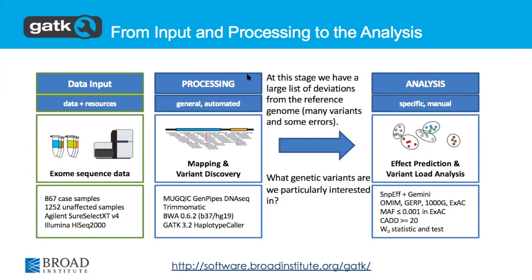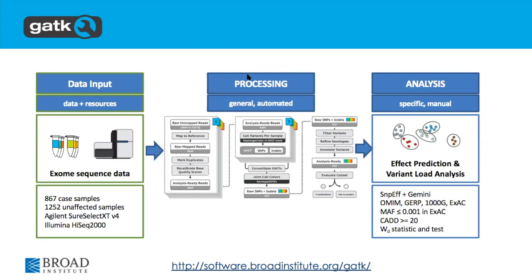Now I'm going to show you how we re-implemented that. Ideally what we would do is take the same data, put it through the GATK best practices analysis pipeline, then replicate what they did for effect prediction and variant load analysis. I'll make a note about when, if you're reproducing somebody else's work, do you need to do it exactly the same way — and when can you take a few liberties? If you change some of the details, you might not get the same exact results out anymore.